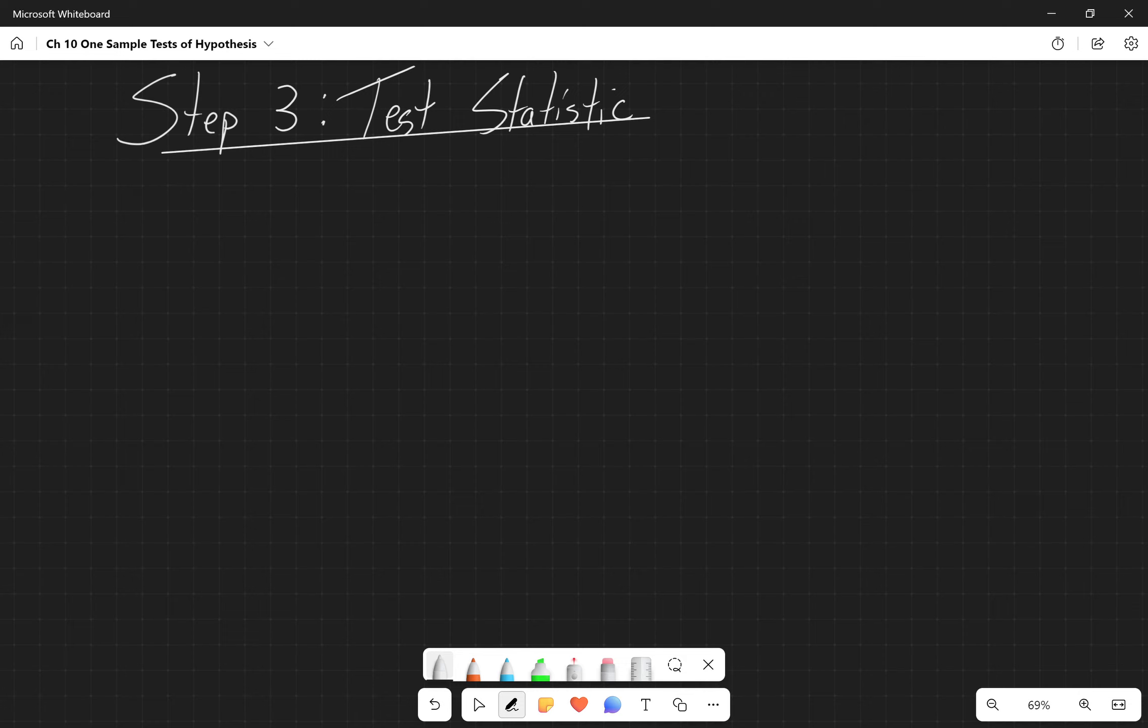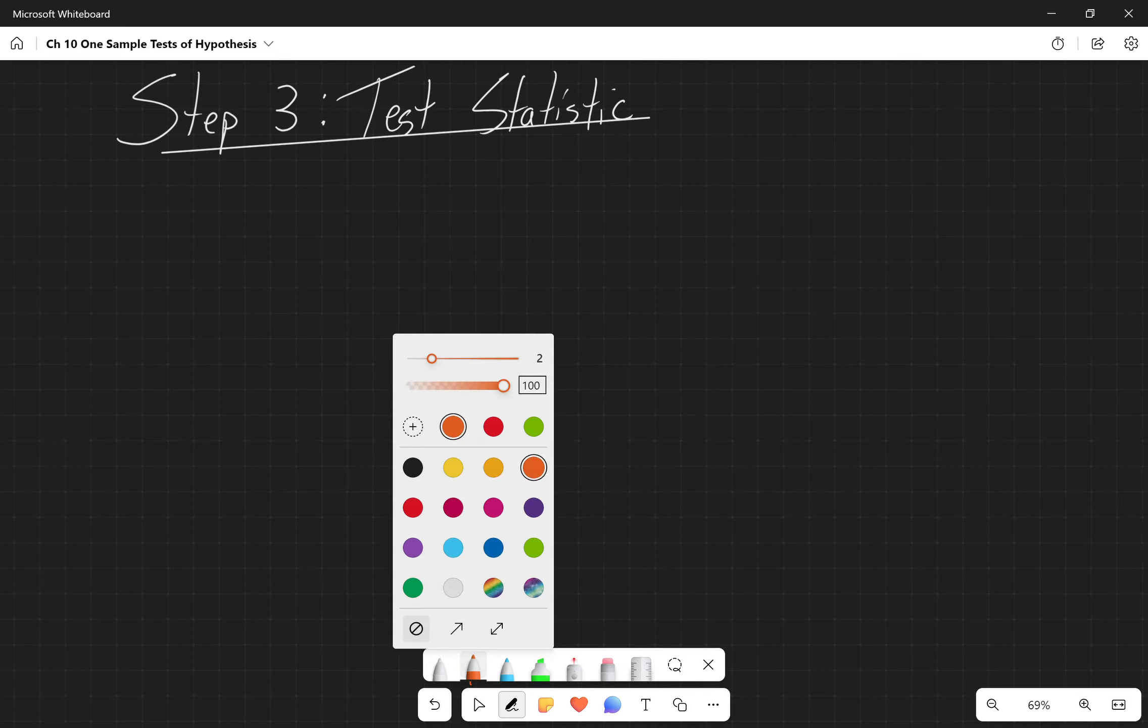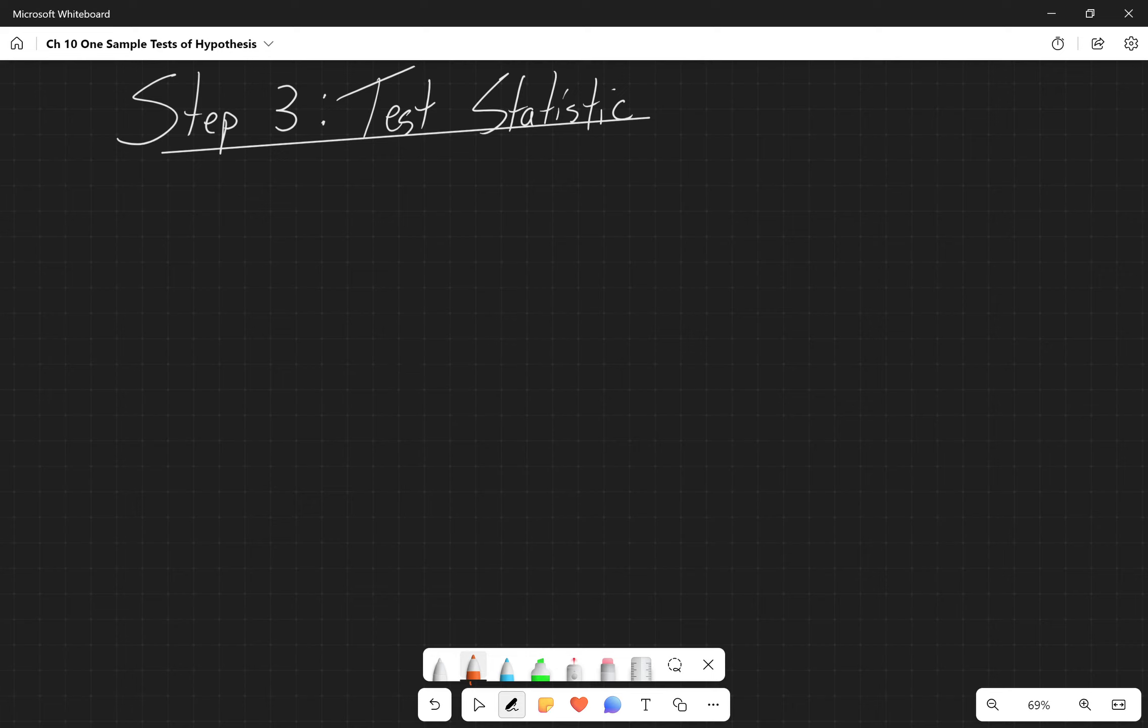So step three is going to be usually where we actually start, and step three is where we calculate the test statistic. So first we have to select the test statistic, and so I'm just going to tell you that when we are testing a mean and the sigma is known, so the population standard deviation is known, we're going to use this formula. Z, which is our test statistic.